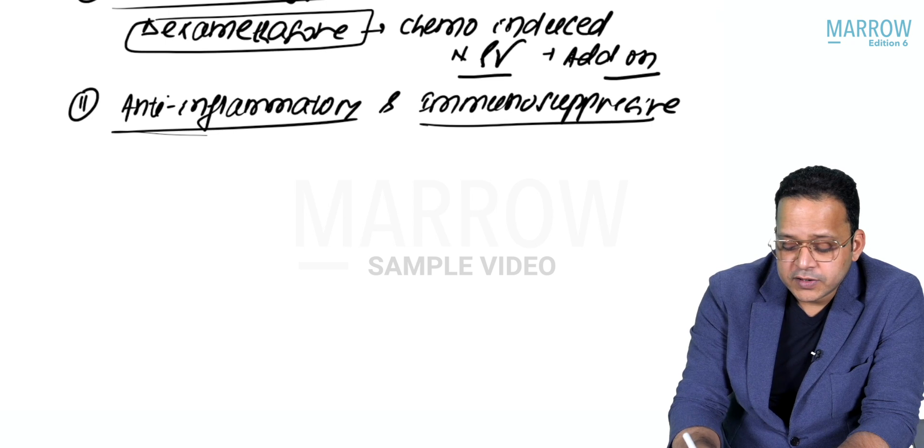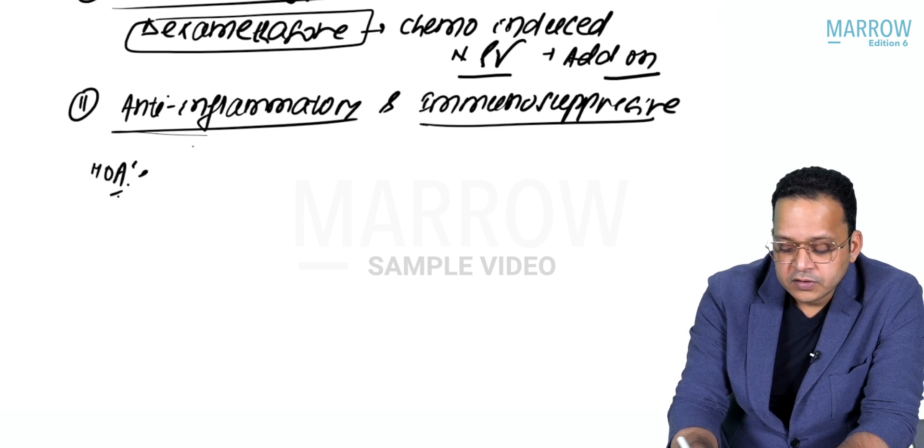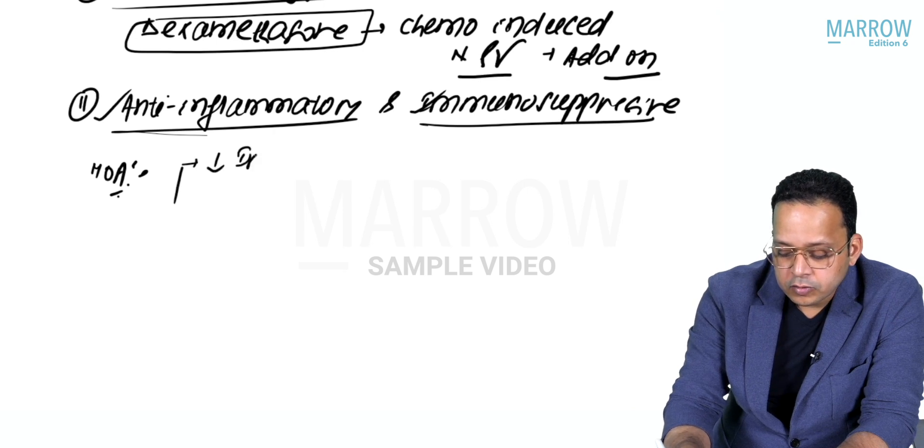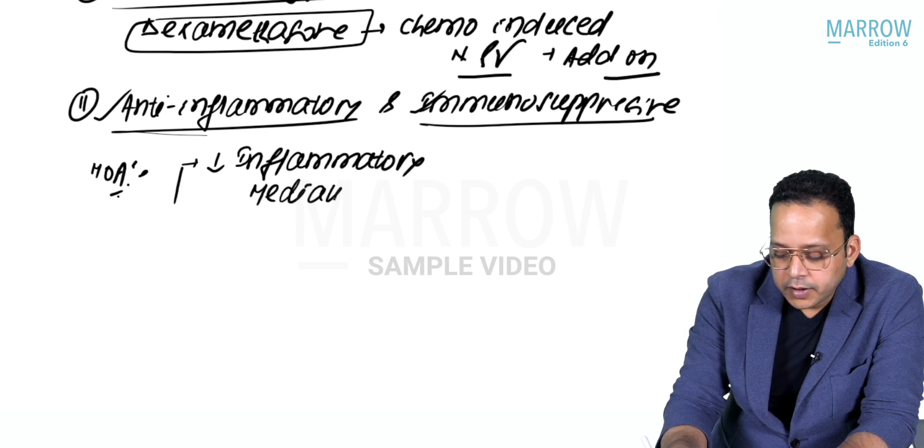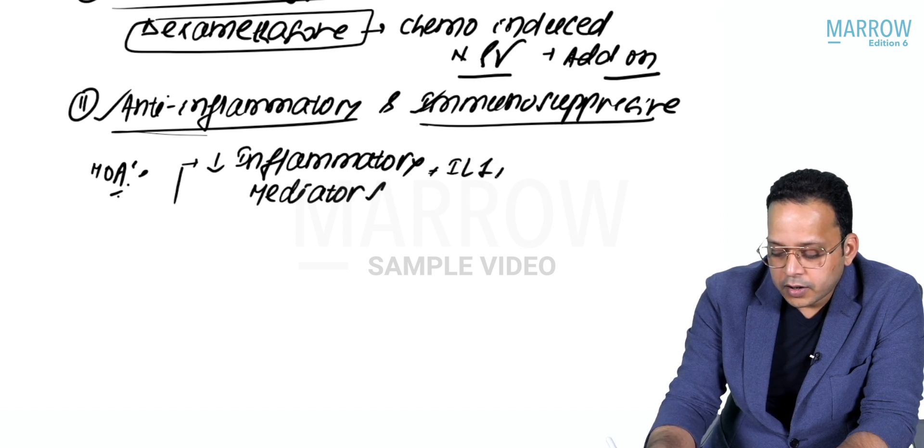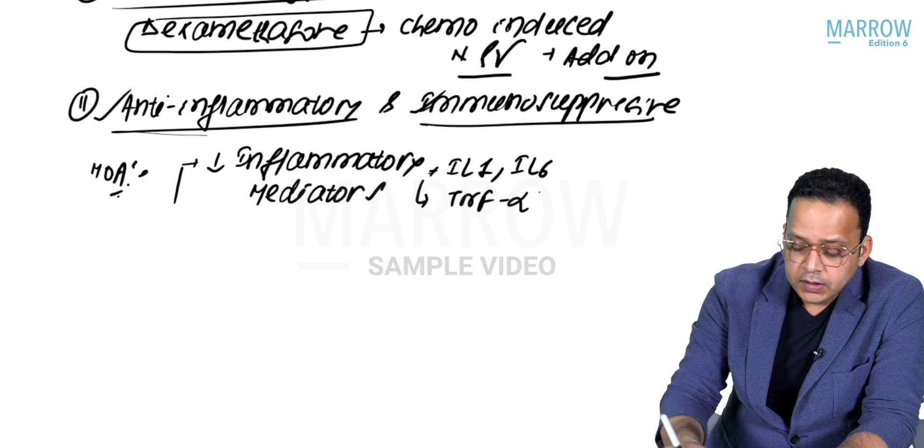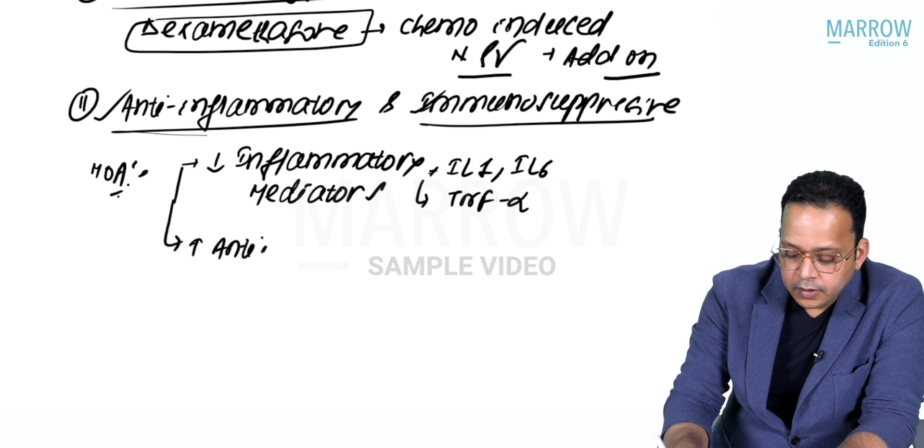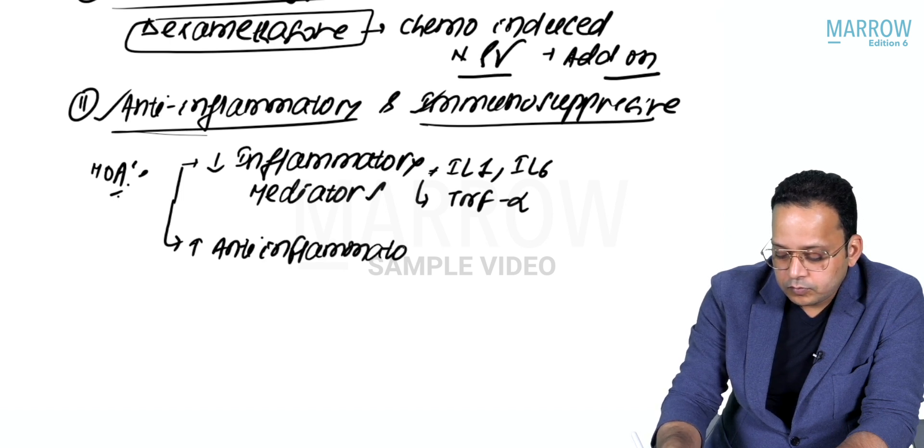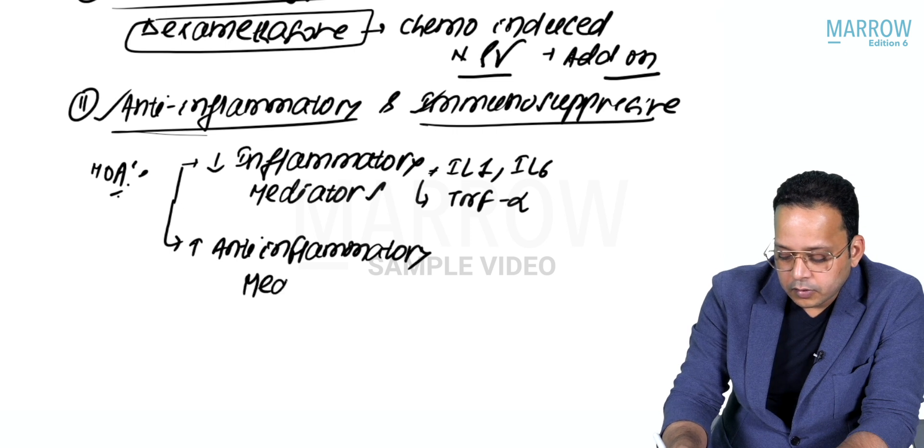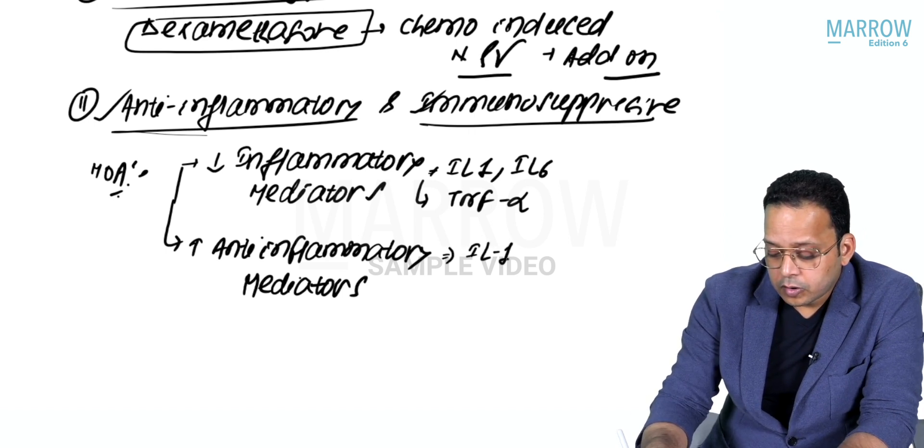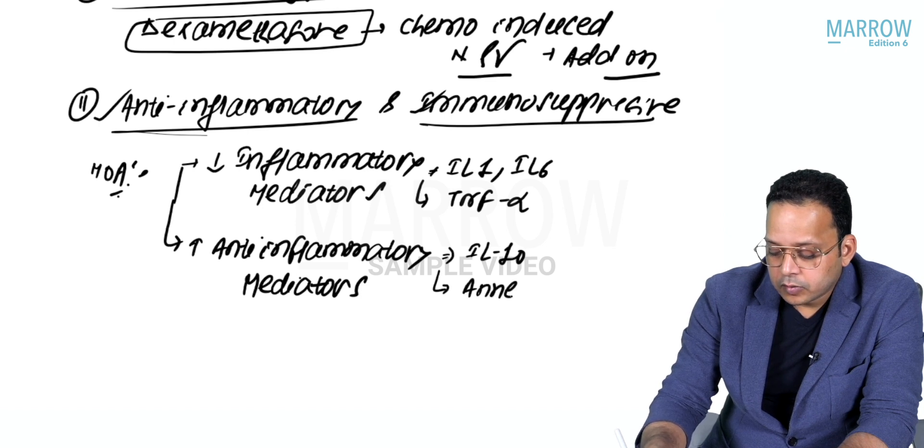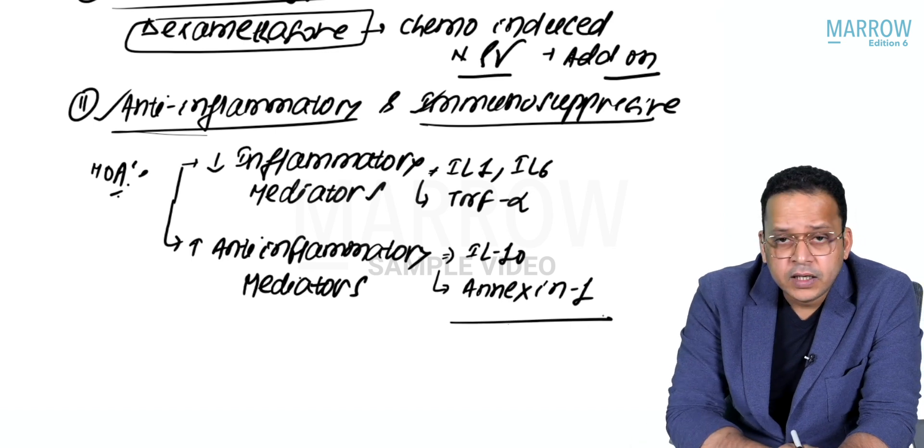Both are related to your immune system. The mechanism of action for both is the same: decreased production of inflammatory mediators like interleukin-1, interleukin-6, TNF-1; increased production of anti-inflammatory mediators like interleukin-10 and annexin-1.